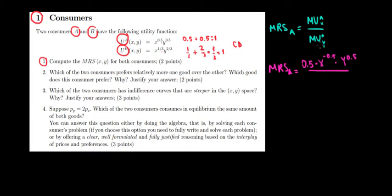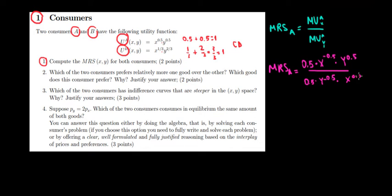This is divided by the marginal utility — the derivative with respect to good Y. Here Y is the variable and everything else is constant. Differentiating Y to the power 0.5 gives 0.5 multiplied by Y to the power of minus 0.5, times the constant X to the power of 0.5.